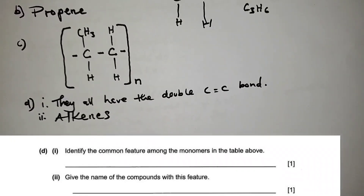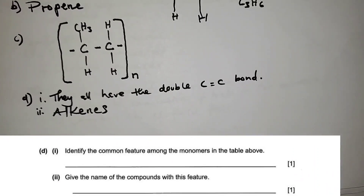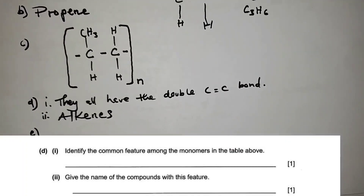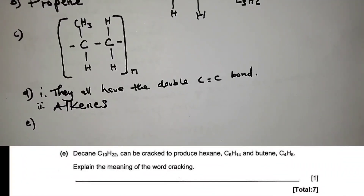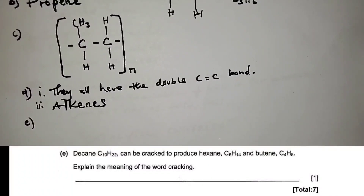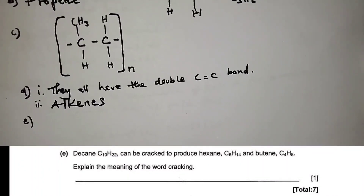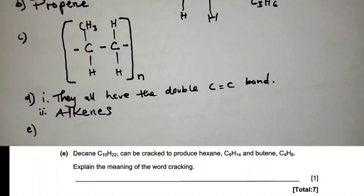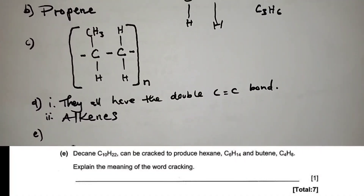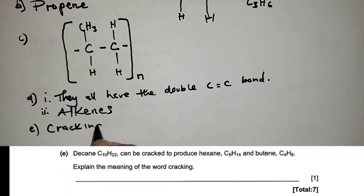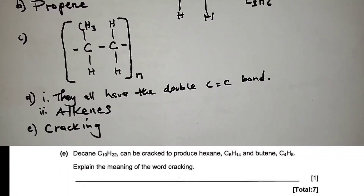Part e: decane can be cracked to produce hexane and butene. Explain the meaning of the word cracking. They are asking us to define cracking of hydrocarbons.